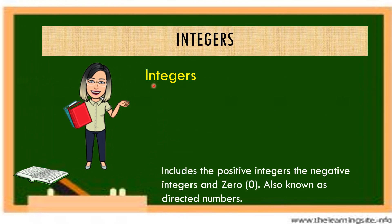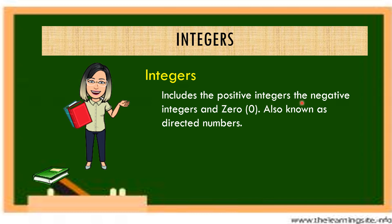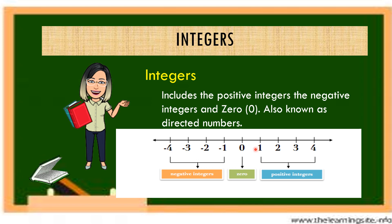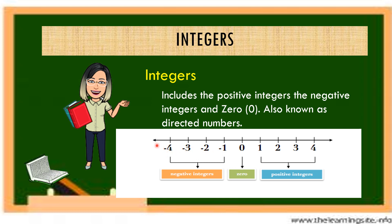We have integers. Integers include the positive integers, the negative integers, and 0, also known as directed numbers. In other books they use the word signed numbers. On a number line, 0 is in the center. The positive integers are to the right of 0 — a number without a sign is understood to be positive. To the left of 0, we have the negative integers: negative 1, negative 2, negative 3, negative 4, with arrows extended to the right and to the left.